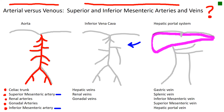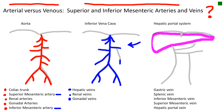We don't see them here. The external iliacs dump into the common iliacs to go to the inferior vena cava to go back to the right atrium. We do pick up internal iliac veins. We see that there are hepatic veins that lead back into the inferior vena cava, renal veins heading back to the inferior vena cava, and gonadal veins heading back to the inferior vena cava. But the problem is — where are the inferior and superior mesenteric veins?